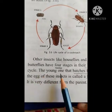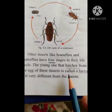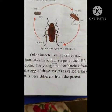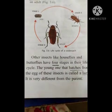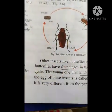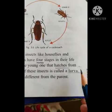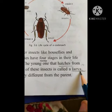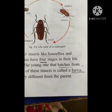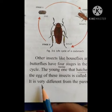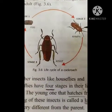The young one that hatches from the egg of these insects is called larva. So the young ones of these insects — house flies and butterflies — are called larva. Please underline larva. Larva is the singular form and the plural is larvae. It is very different from the parent. Whereas nymph is very similar to the parent, larva is very different.